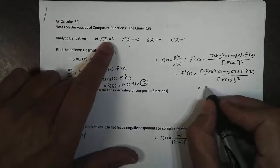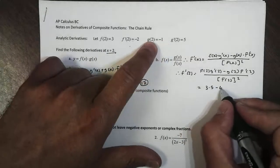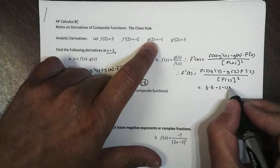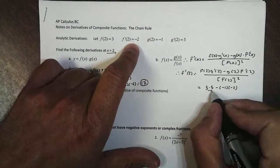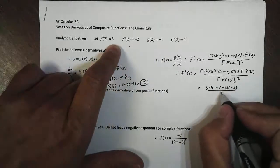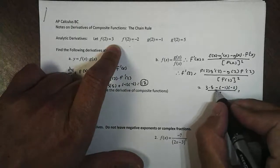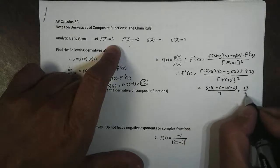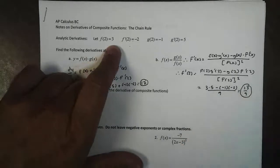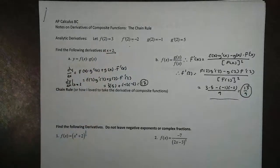And we can do this really quickly. f(2) again is 3, g'(2) is 5, minus g(2) which is negative 1, times f'(2) which is negative 2, all over f(2) squared. So that becomes 9. And what do we get here? That's a lot of negatives right there. 15 minus 2, so I got 13 over 9.